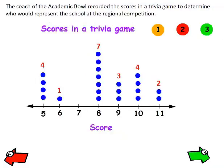Here's our next one. The coach of the academic bowl recorded the scores in a trivia game to determine who would represent the school at the regional competition. These are the scores of the trivia game. This person scored a 5, and this person scored 5, and this person scored 5. This one scored an 8, and you can see a total of 7 students scored 8. A total of 4 students scored a 10.